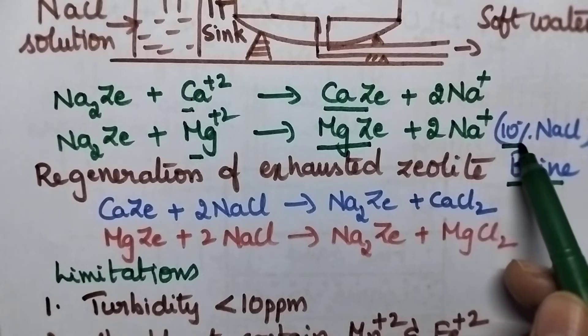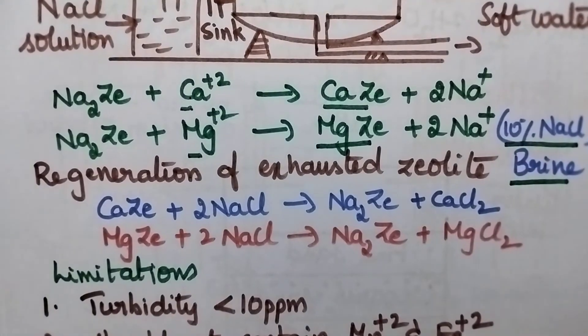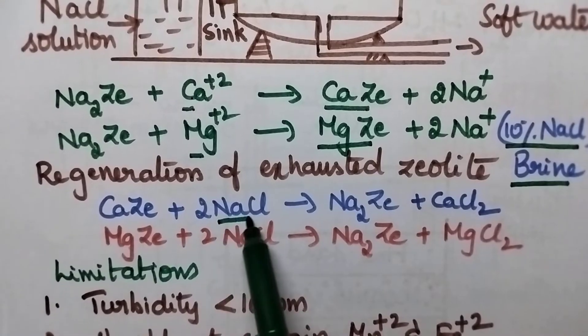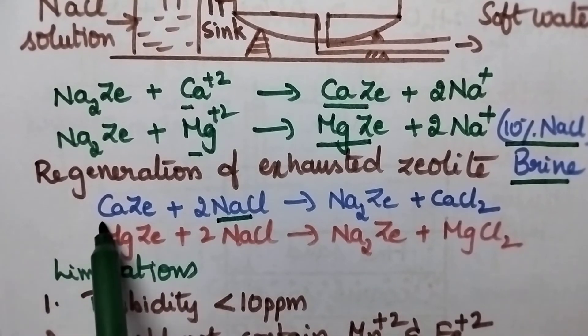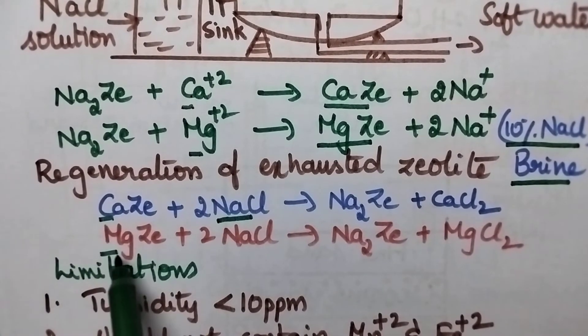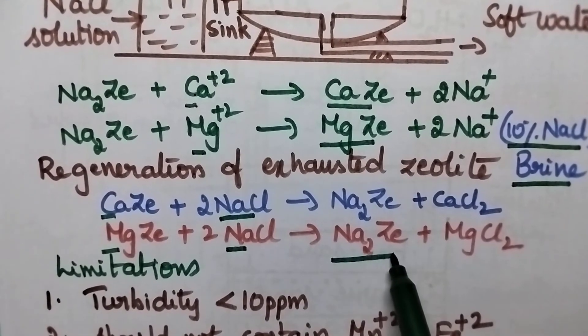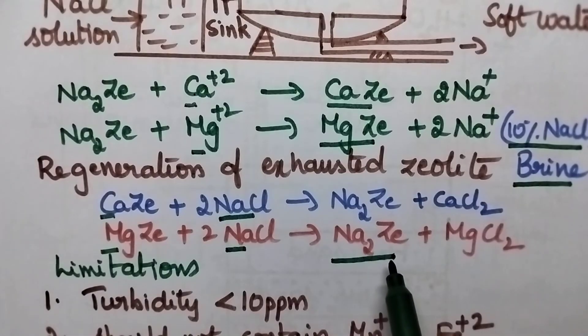Brine solution means it is 10% sodium chloride solution. So whenever the exhausted zeolite bed is washed with sodium chloride solution then the calcium and magnesium ions are replaced by sodium ions. That means it again results in the formation of sodium zeolite.